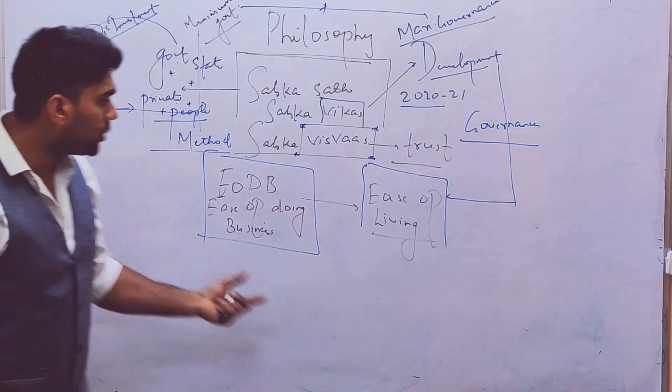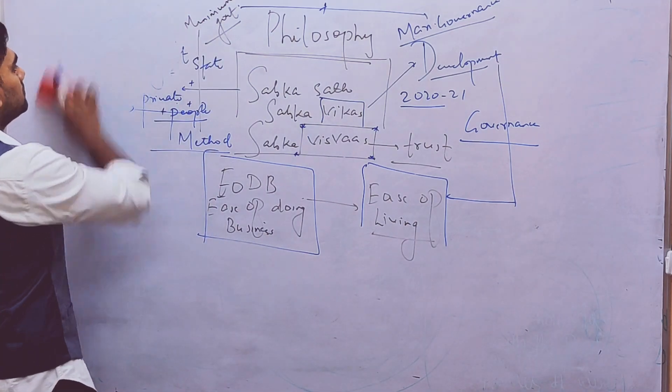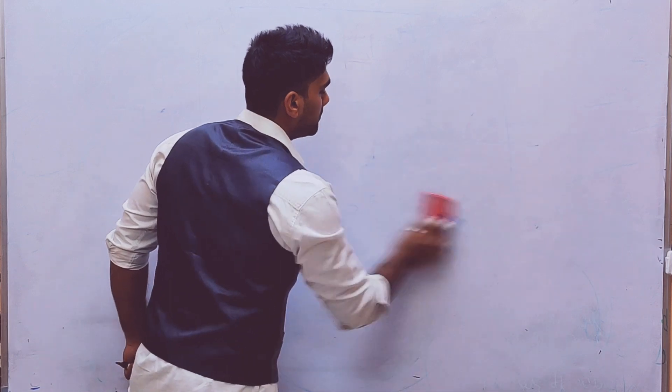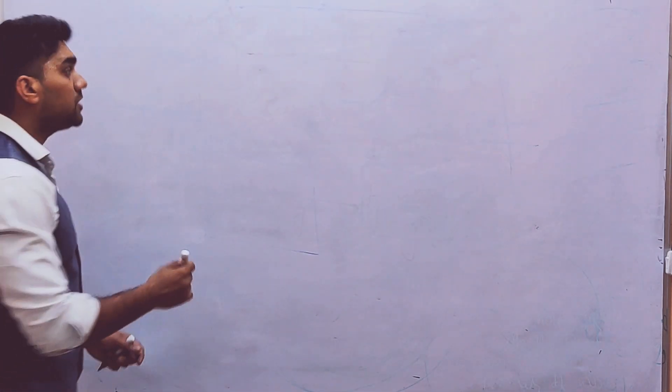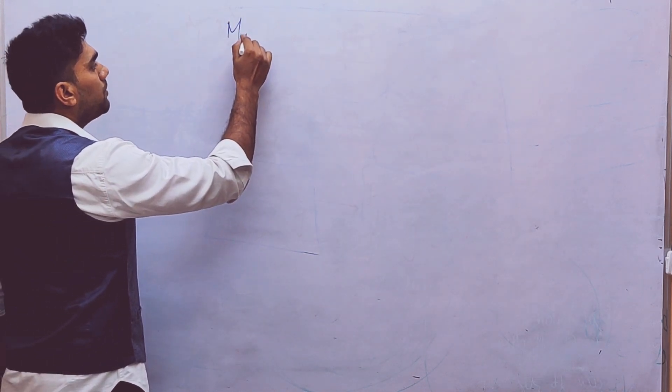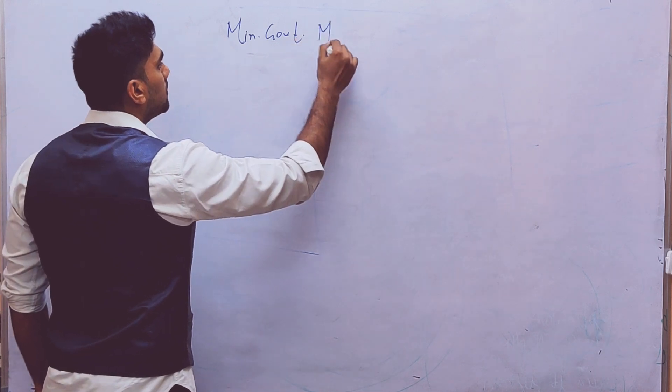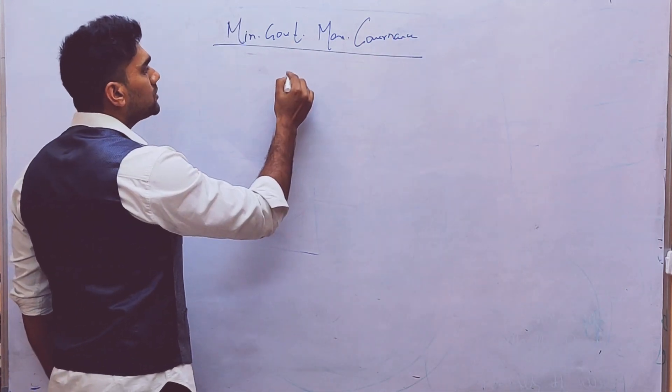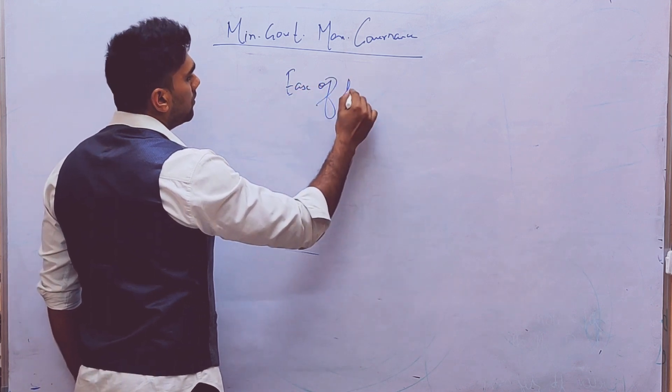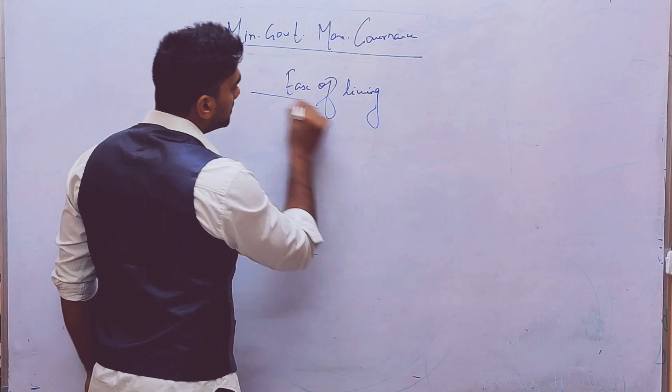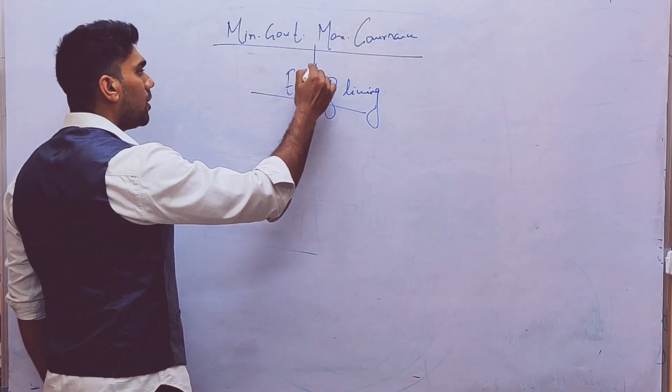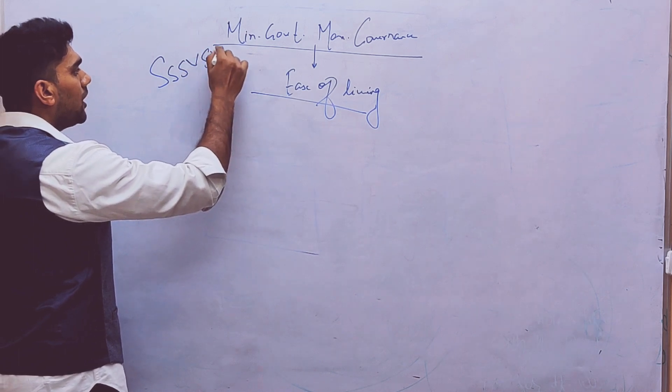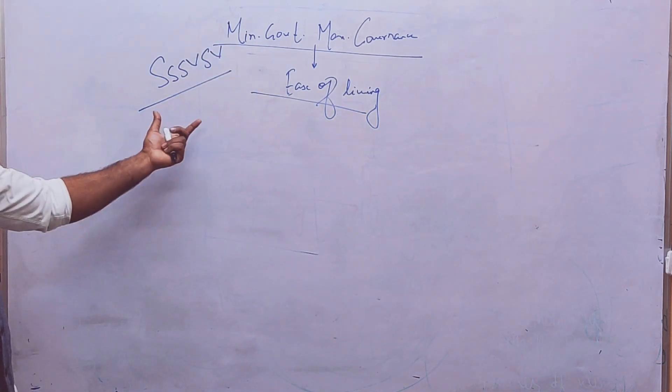Now let's move to the second point. I hope you can understand this point well. So I will take some of the key terms. The key terms that I got are called as minimum government, maximum governance. Second key term was ease of living. This is the objective. So again this became the method for achieving the objective. That is why the slogan is Sabka Saath, Sabka Vikaas, Sabka Vishwaas. This is the slogan. I already have discussed this.